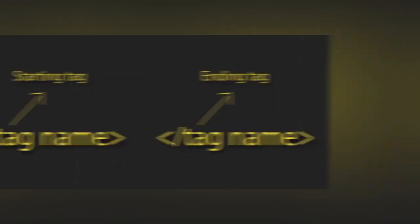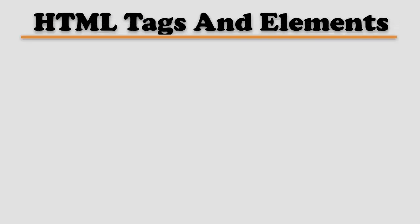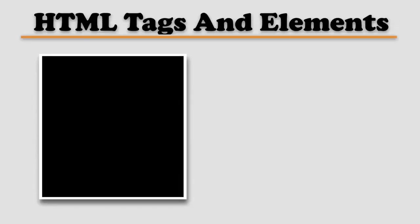Every HTML element has these angle brackets. Generally we have a starting tag and a closing tag. And there is one more term which we call an element — an element consists of your starting tag and ending tag.